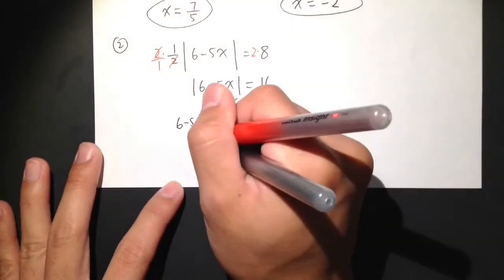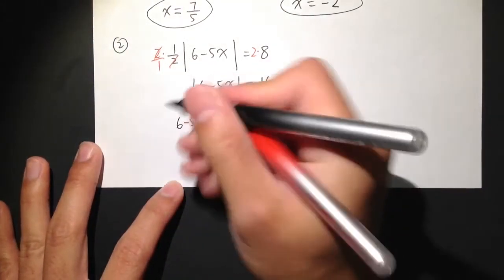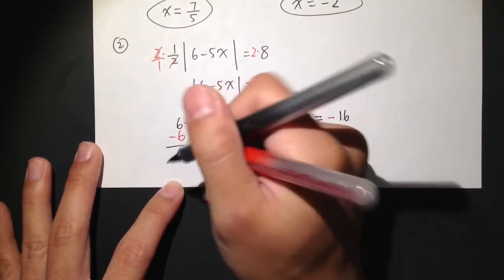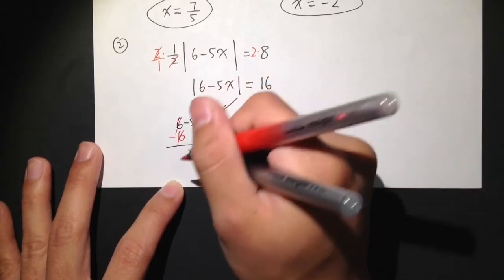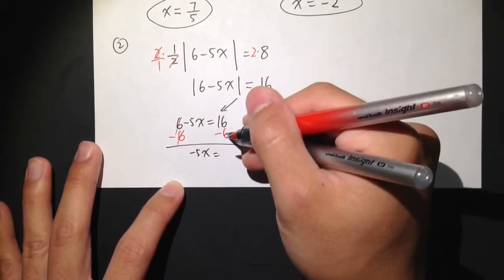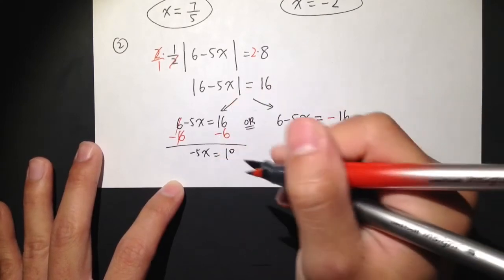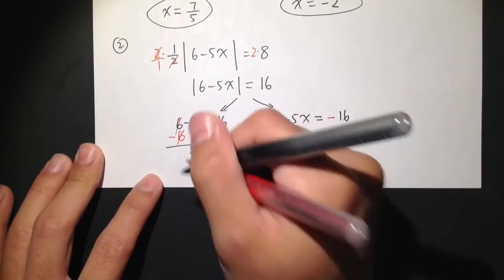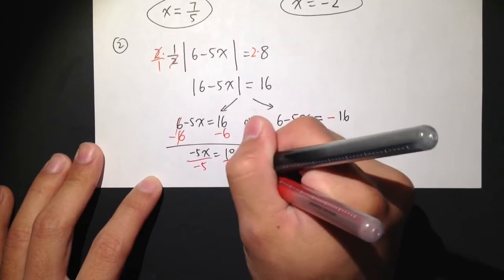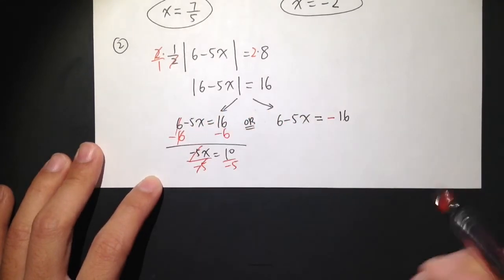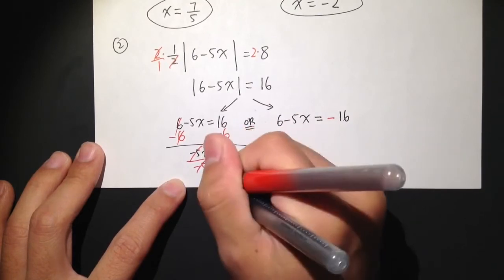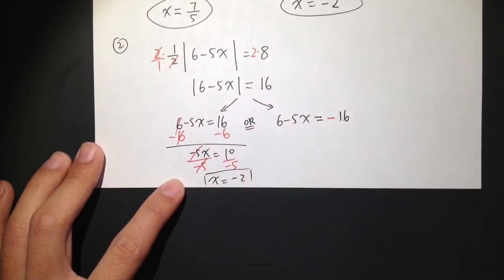For the first equation, 6 minus 5x equals 16 — subtract 6 from both sides, the 6 cancels, and negative 5x equals 10. Divide both sides by negative 5, and x equals negative 2. That's one of my answers.